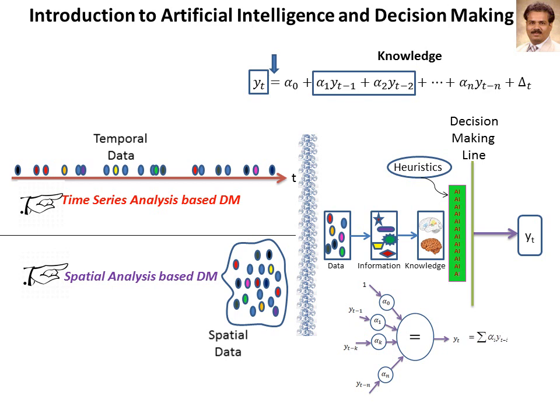Going back to the key difference between the time series and time parallel methods: the way decision making visualizes or sees the data — whether in a time series way or in a parallel way — accordingly, we can formulate two theories around decision making. The time series analysis theory is around probability and statistics, which is in other words called a parametric model.